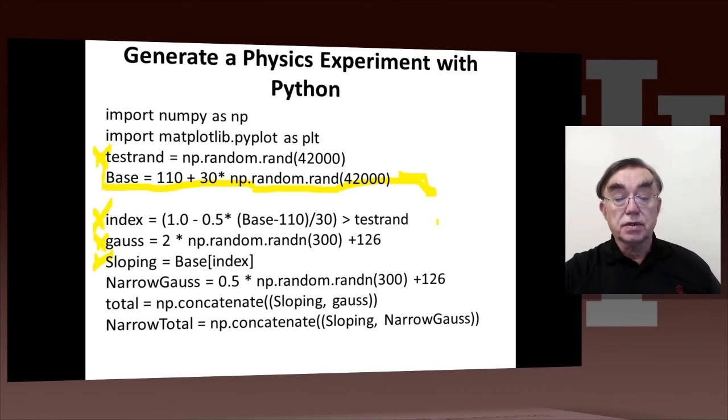We will discuss this one here, Gauss equals 2 times the so-called randn, generates the so-called Gaussian distribution or normal distribution. And it's centered at 126 with a width of 2, and this is roughly what you might expect for the Higgs.